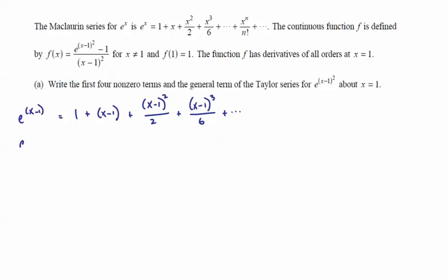Then e to the x minus 1 squared would then just be to square the x minus 1. And in this case, I'll write it out so that you can see we would have x minus 1 squared, and then to the second power over 2, plus x minus 1 squared,